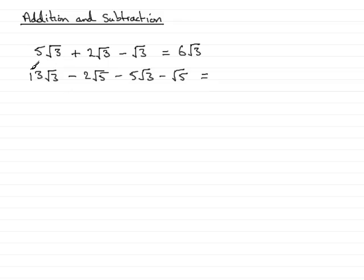If we look at the root 3 terms, we've got 13 root 3, take away 5 root 3, there's no other root 3 terms here, so that's going to mean that I've got 8 root 3. And then when we look at the root 5 terms, we've got minus 2 root 5 minus another 1 root 5, so that's minus 3 root 5.